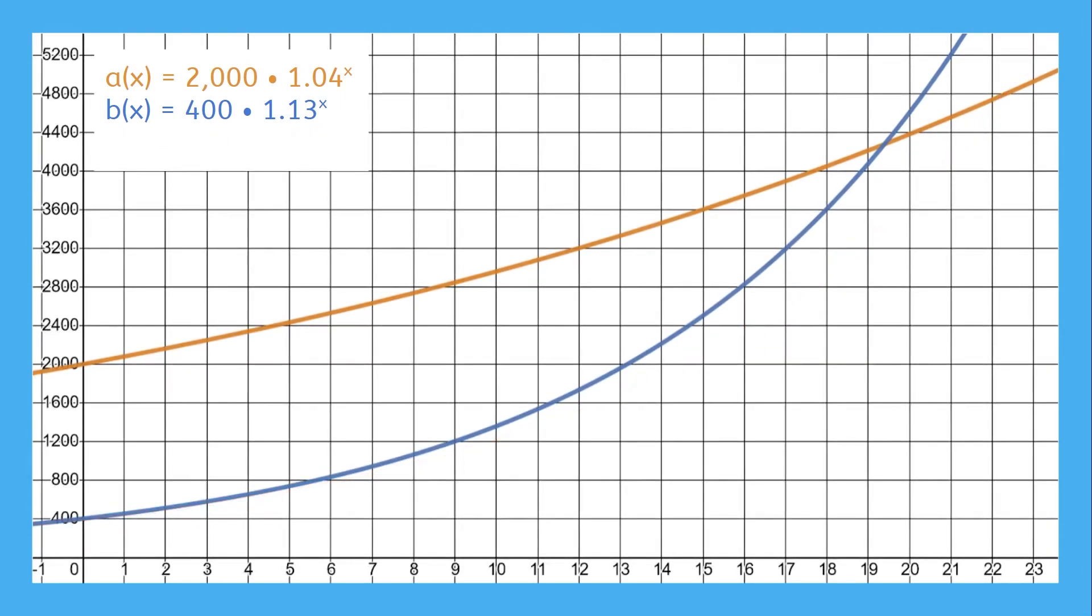If we compare functions A and B, we see that B outpaces A at around the input 19.5 mark, despite the huge lead A had at the beginning. Why is that? It's because B has a higher growth factor. Higher growth factors will always grow faster than smaller growth factors.